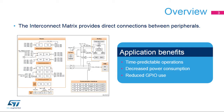The Interconnect Matrix, integrated inside STM32 microcontrollers, provides direct connections between peripherals. Applications benefit from these interconnections to ensure time-predictable operations and decrease power consumption. This matrix avoids complex management of peripheral communications through reading or writing registers using CPU instructions. In some cases, it reduces the need to loop a signal from a source to a destination through a dedicated GPIO.